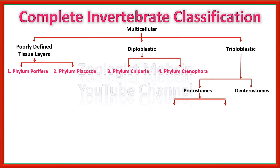Protostomes are further divided into two clades: Ecdysozoa and Lophotrochozoa. Ecdysozoa are those animals which shed their body covering — either exoskeleton or cuticle segments — while Lophotrochozoa are organisms which have lophotrochozoan characteristics.